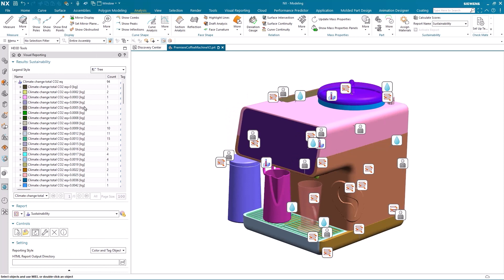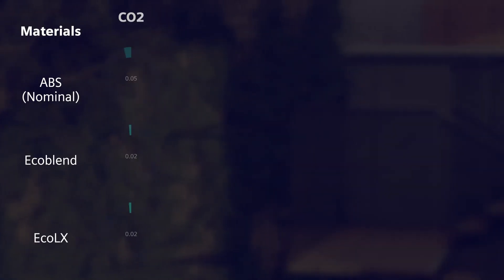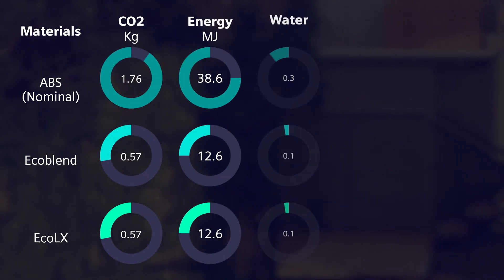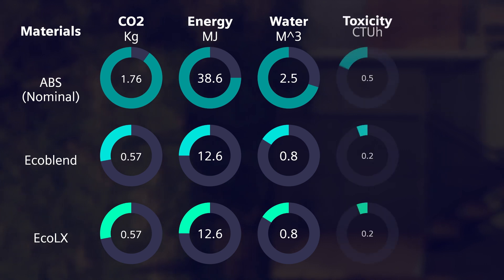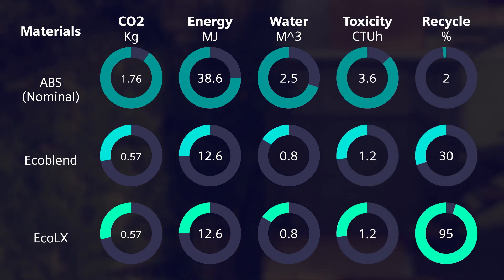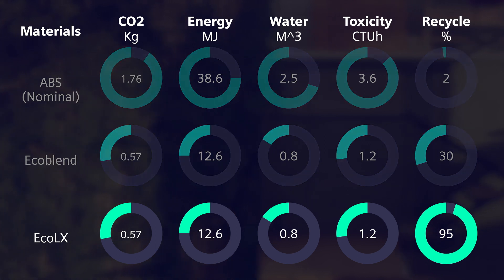Let's return to the Sustainability Impact Analysis module. Our designers have assigned the different plastics to the relevant parts, and the report has some interesting results. Although the difference in CO2 production between the three is small, this option includes a much higher percentage of recycled materials. The designers know from Teamcenter that this material costs a little more, but they'll recommend it for use due to its superior environmental credentials. Now the base material is finalised, the designers are thinking about colours.